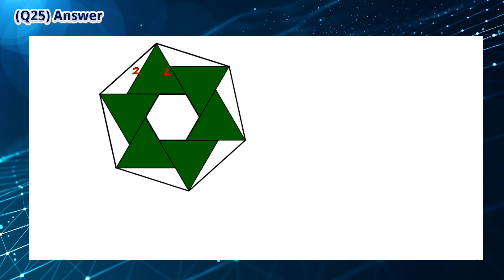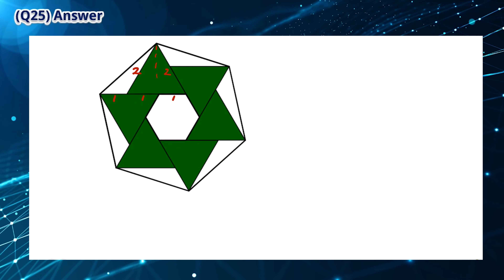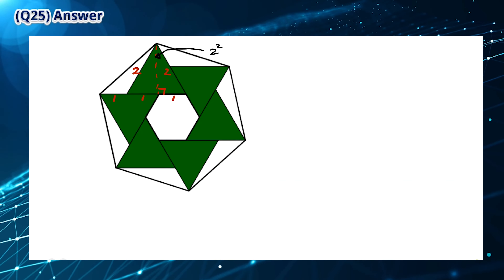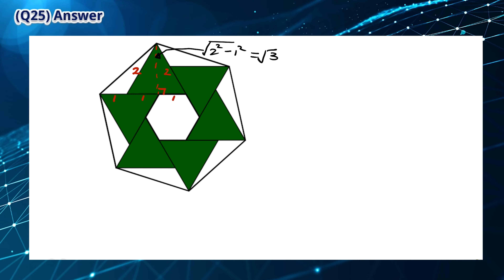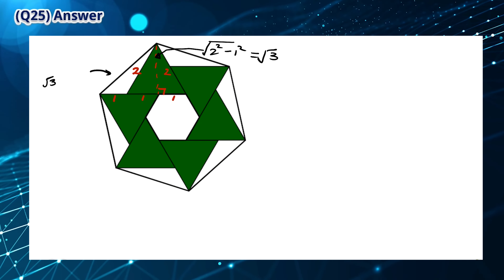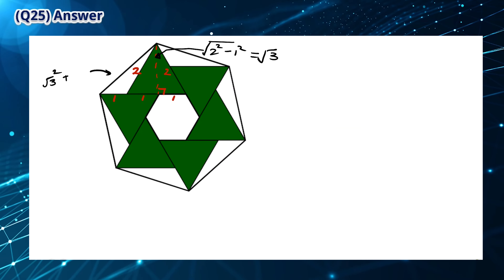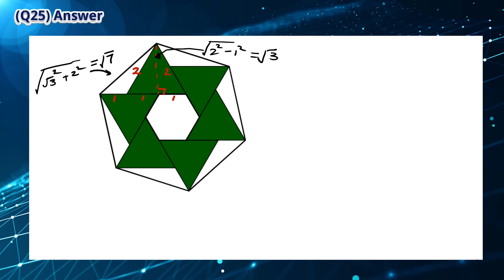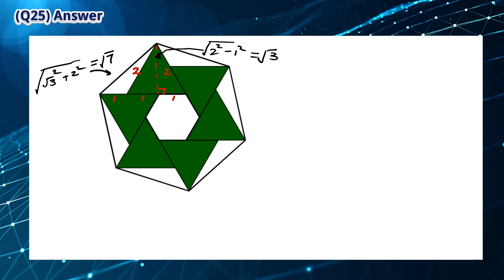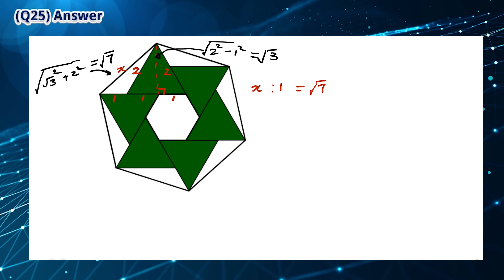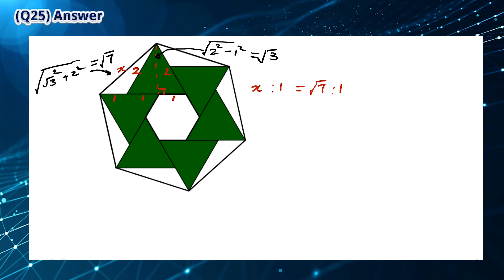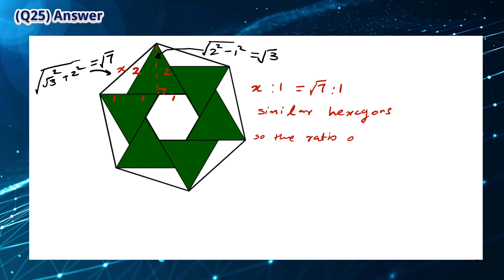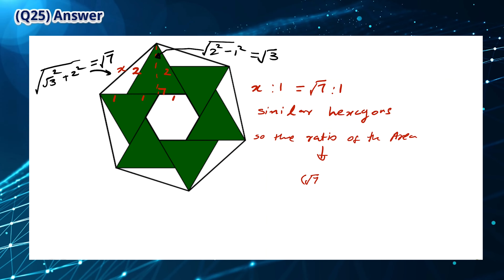Based on the information, we label the diagram and use the Pythagorean theorem to find the height of one of the small equilateral triangles, which is equal to √3. Using Pythagorean theorem again, the side length of the large hexagon is equal to √7. The ratio of x to 1 is √7 to 1. Since both hexagons are similar, the ratio of areas is squared, giving a ratio of 7 to 1.